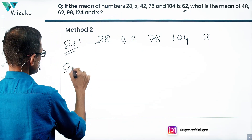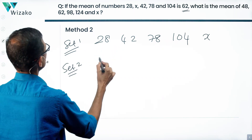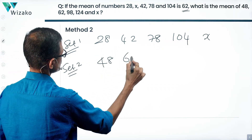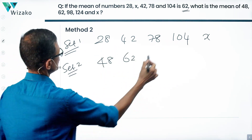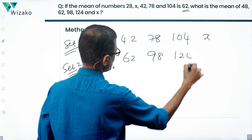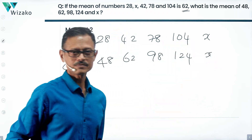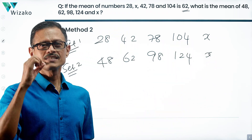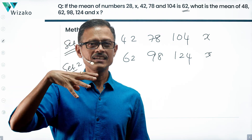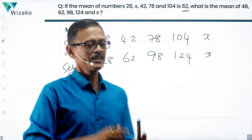What is our set two? Let me write set two: 48, 62, 98, 124 and x. The second method will work only for a question of this kind. What is making this kind?